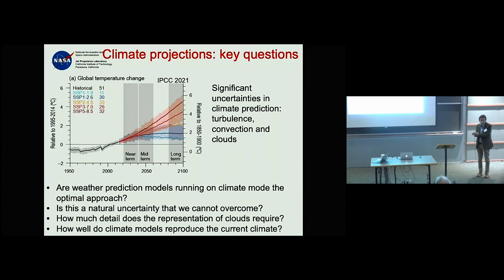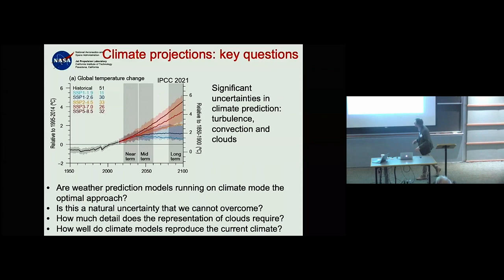It could also be that there is a natural uncertainty we cannot overcome — the atmosphere and climate system may be so sensitive that whether clouds decrease by one percent simply can't be known. Maybe that fundamental uncertainty is irreducible.